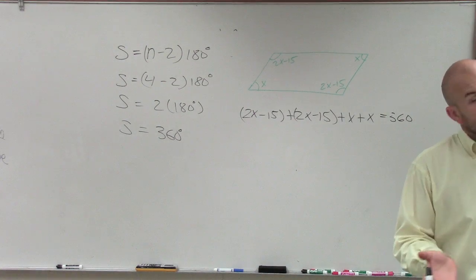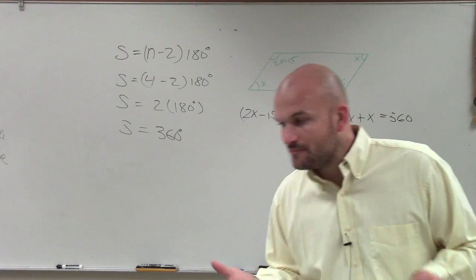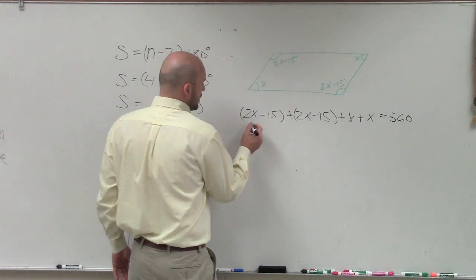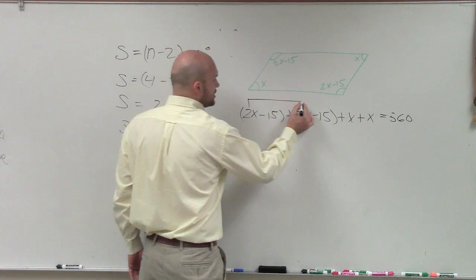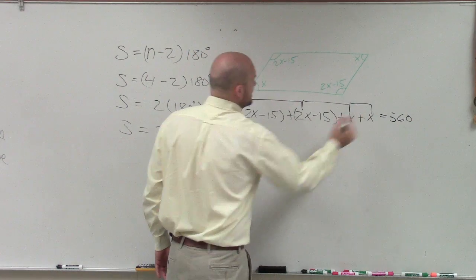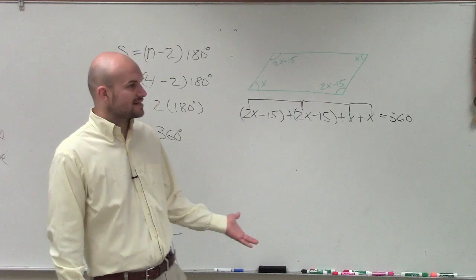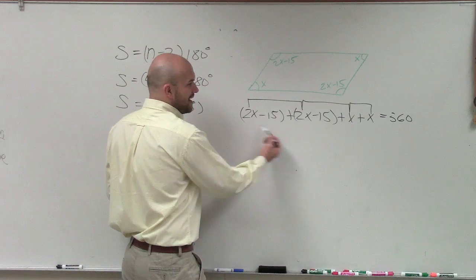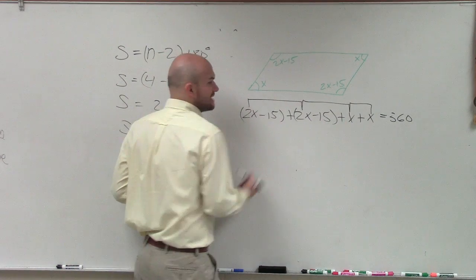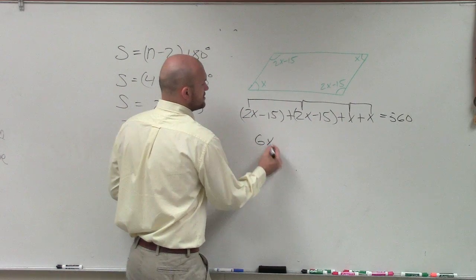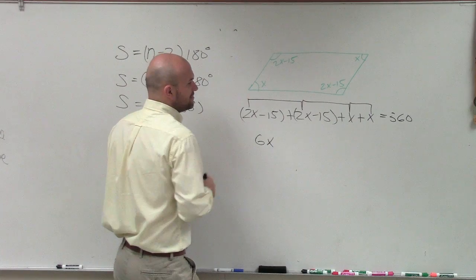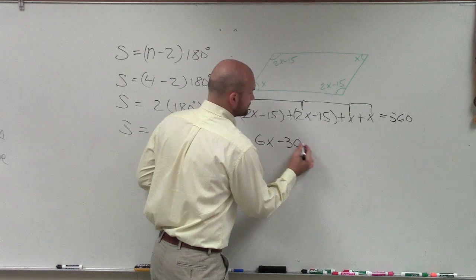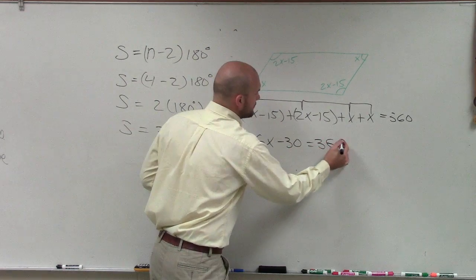Now, the next thing we do is we need to solve the equation. But ladies and gentlemen, we have multiple terms of x, so we need to combine our terms that are what we call like terms. These all have a singular x, so they all have a common factor of x, so we can combine them. So positive 2x plus 2x plus x plus x is going to be 6x. Negative 15 plus a negative 15 is negative 30 equals 360.